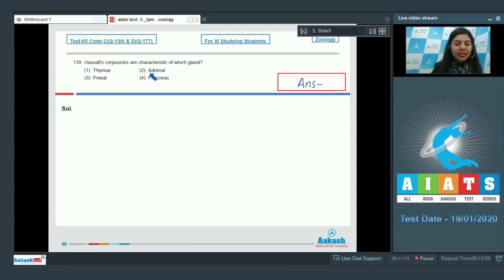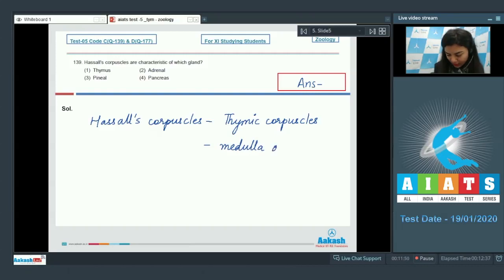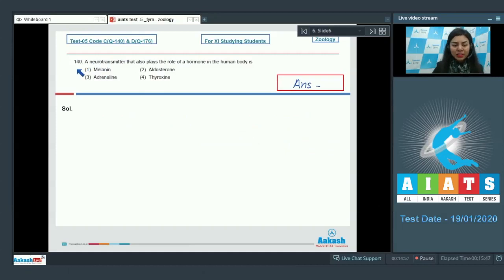Hassall's corpuscles, students, are also known as thymic corpuscles, and these thymic corpuscles or Hassall's corpuscles are found in medulla of thymus. So the right answer here is option one, thymus. Question number 140: A neurotransmitter that also plays the role of a hormone in the human body is - melanin, aldosterone, adrenaline, thyroxine.